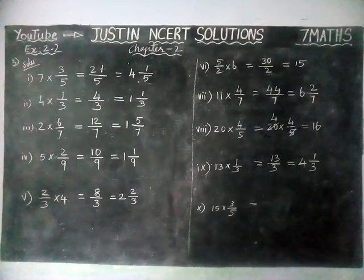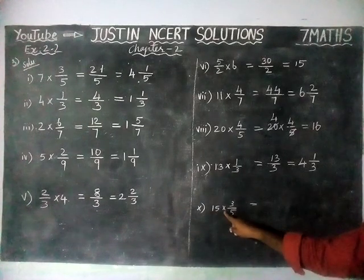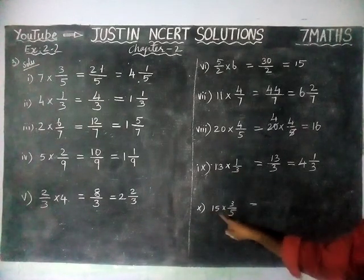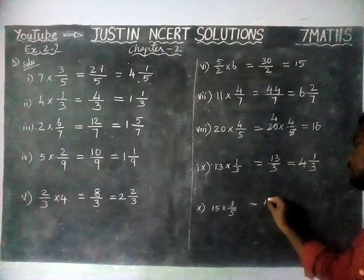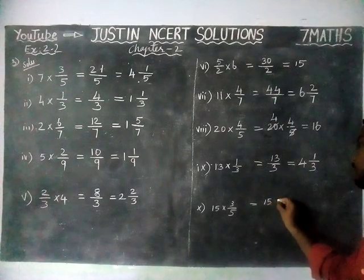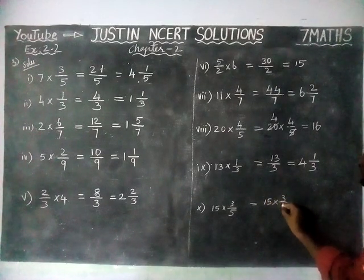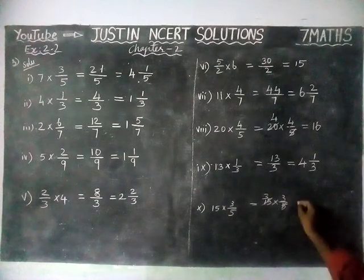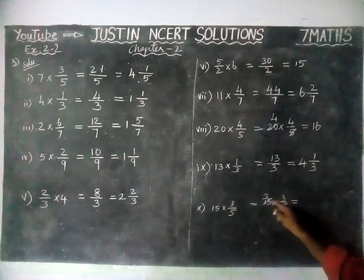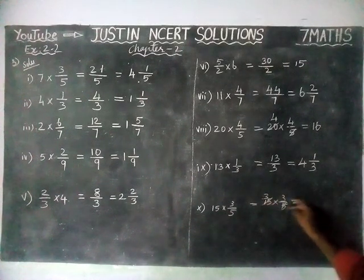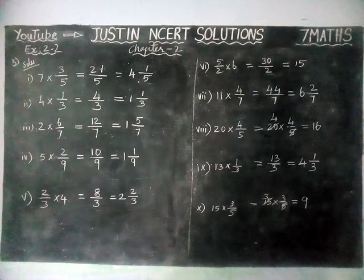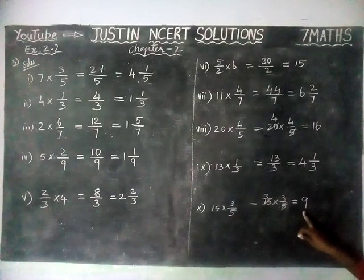10th question: 15 into 3 by 5. If it is possible, we can simplify here itself. 1 five is 5, 3 fives are 15. Now 3 threes are 9. We are getting a whole number, so the answer is 9.